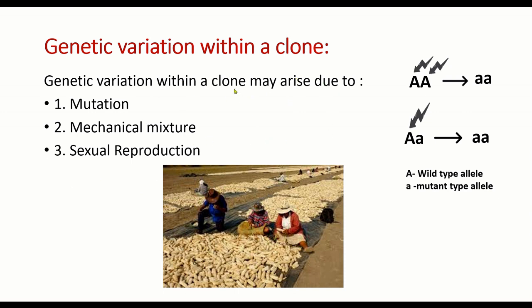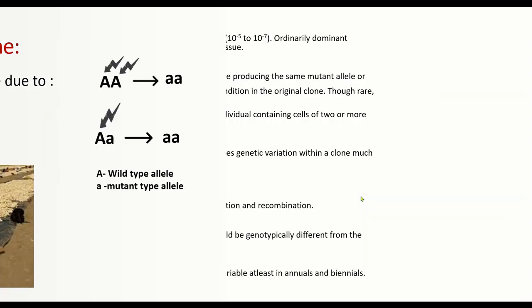Genetic variations can be attained by hybridization and from segregating generations such as F2, F3, and F4. The fourth source is clonal degeneration — loss in vigor and productivity of clones over time. If clones are not maintained properly, there will be loss in vigor and loss of growth and development in crop plants.